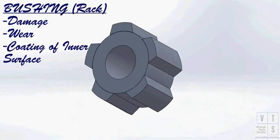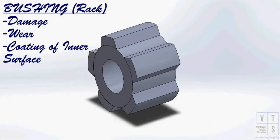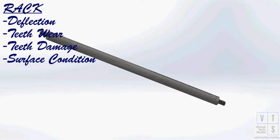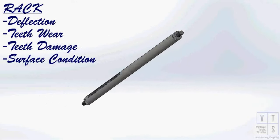Inspect rack bushing for wear or damage. If found defective, replace. Inspect for deflection, teeth wear or teeth damage. Also, rack surface to be inspected for wear or damage.